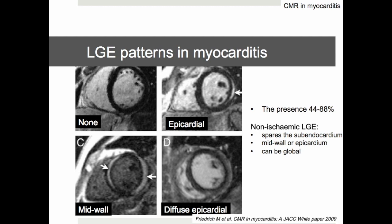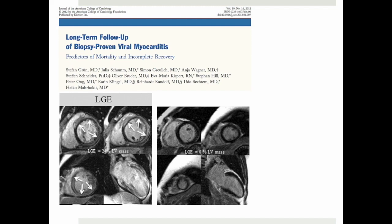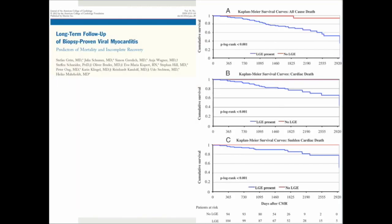By using CMR we have gained important new insights into the pathophysiology of myocarditis as well as the course of disease. The myocarditic pattern of late gadolinium enhancement typically spares the endocardium and concentrates on epicardial and middle layers of myocardium. Approximately two-thirds of patients with previous myocarditis have evidence of subsequent myocardial damage as seen by the presence of late gadolinium enhancement, which has prognostic relevance and has been associated with a worse outcome.